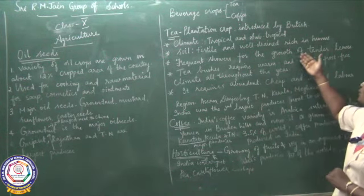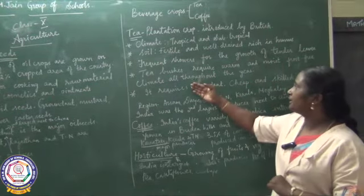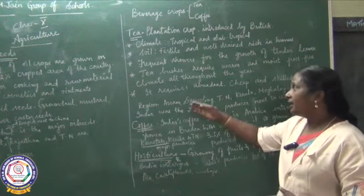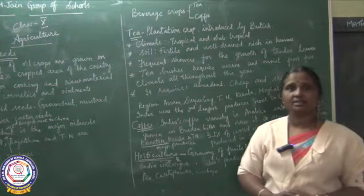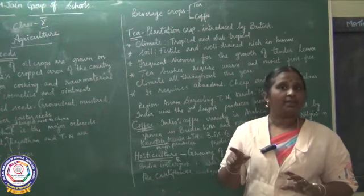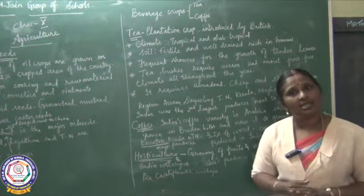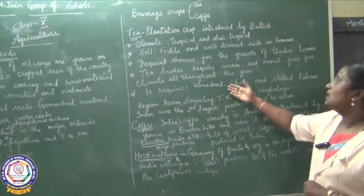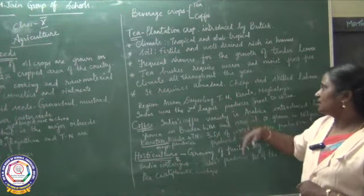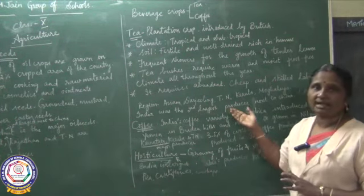Tea needs frequent showers for the growth of tender leaves. Tea bushes require warm, moist, frost-free climate all throughout the year. It requires abundant, cheap, and skilled labor. The labor for this type of cultivation is migrant labor — they are not permanently inhabited in that place, because the wages given are very low compared to other jobs. Some regions where tea is grown are Assam, Darjeeling, Tamil Nadu, Kerala, and Meghalaya.